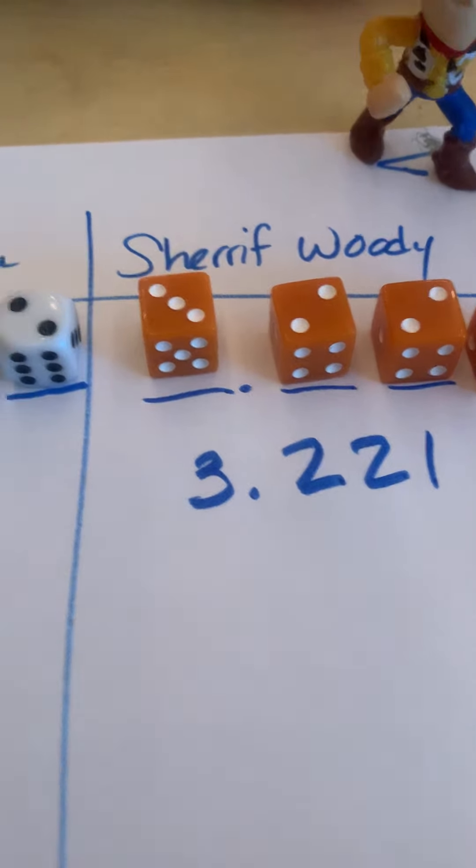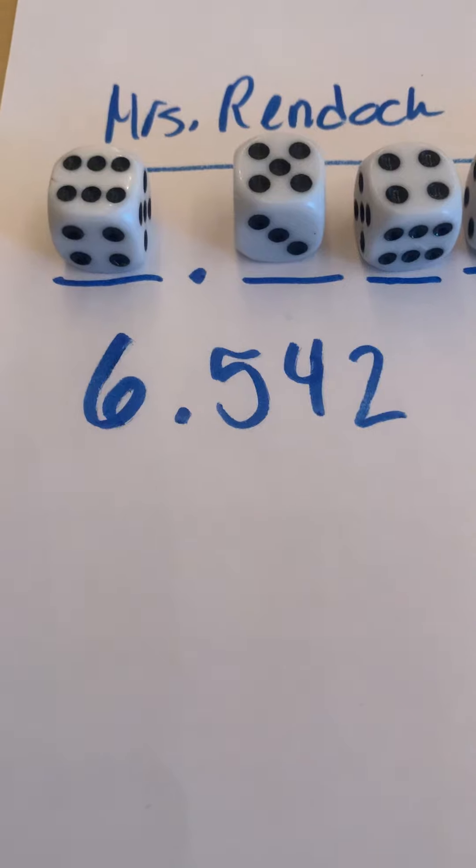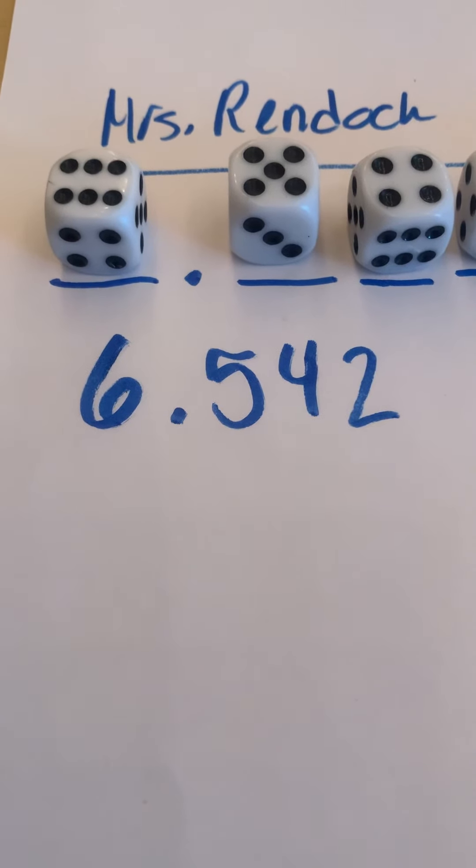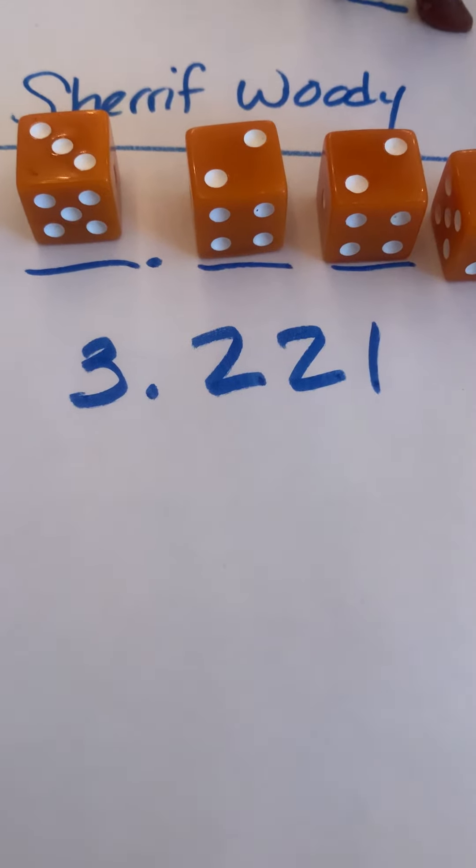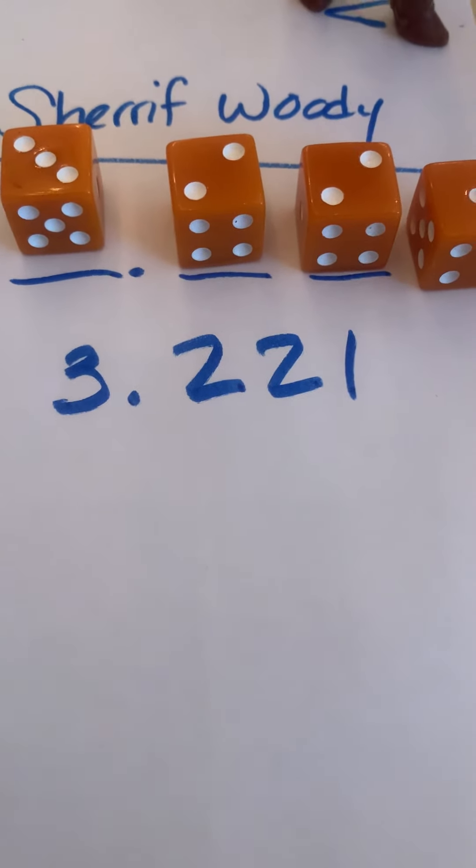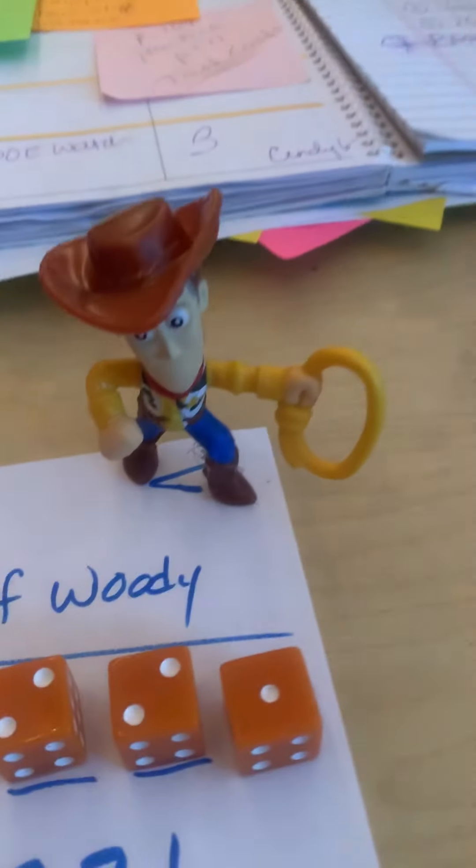We are going to look to see whose decimal is larger. And my decimal was six and five hundred forty-two thousandths, and Sheriff Woody's is three and two hundred twenty-one thousandths. So what do you guys think? What do you think, Sheriff Woody?